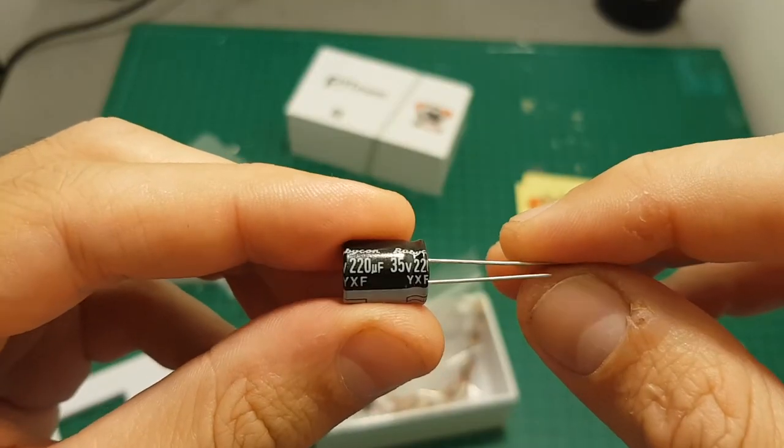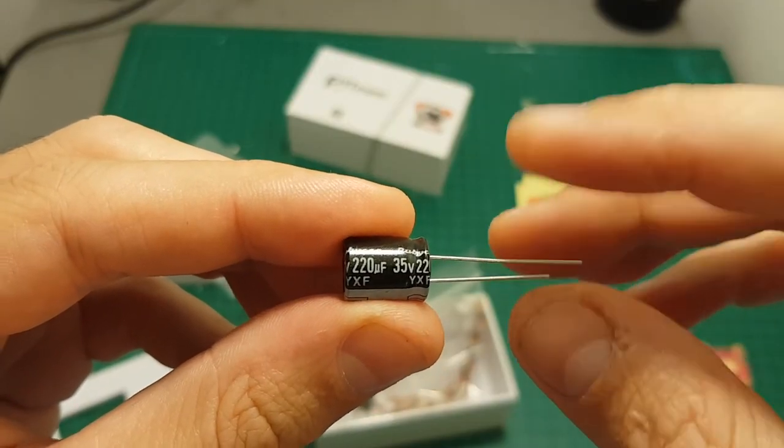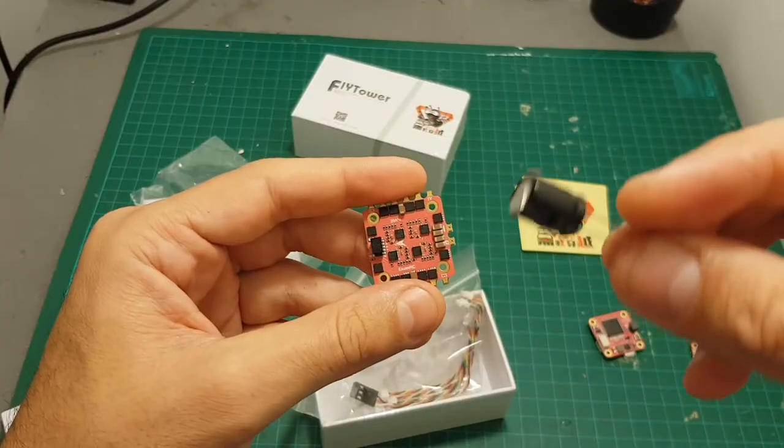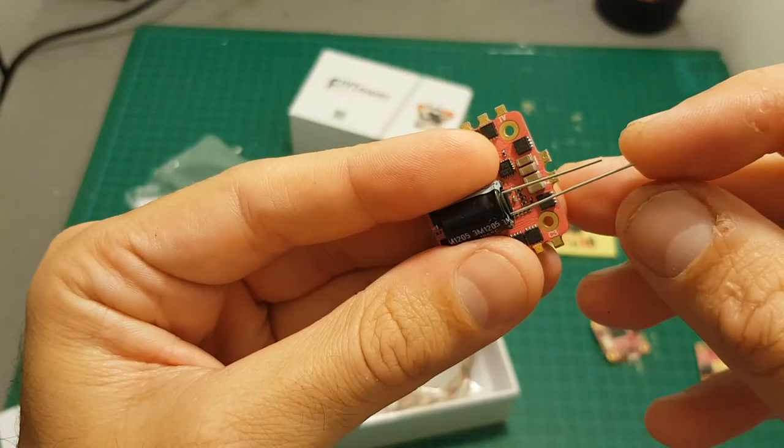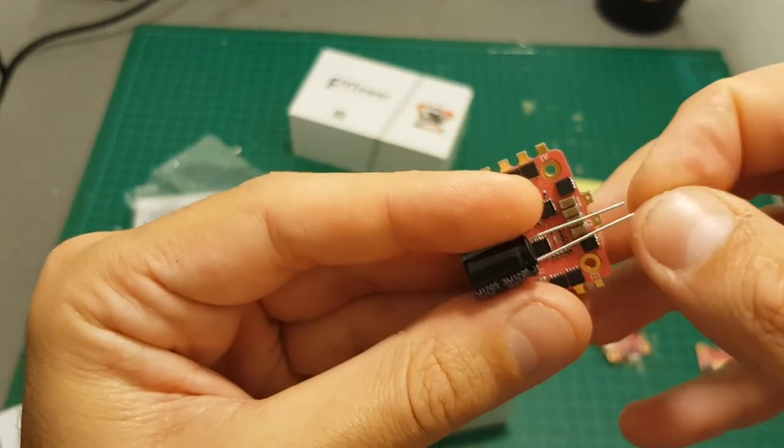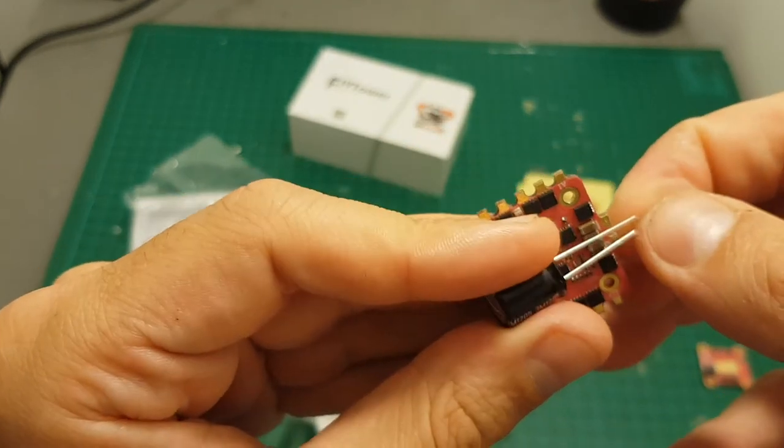We're also getting this 220 microfarad capacitor and if you choose to use it, which I think I'm going to use it by the way, you will need to solder the longer leg to the plus and the shorter leg to the ground pad.